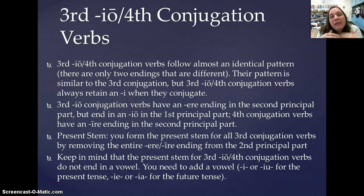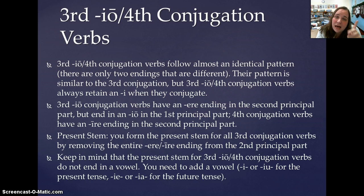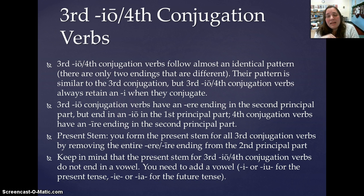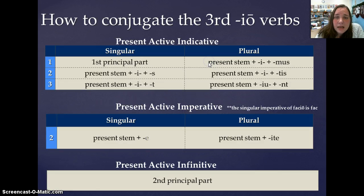You need to supply the vowel to show that you're either in the present or the future. The vowels that you supply for the present are either I, or IO in the Third Person Plural. For the future, it's IO in the First Person Singular, and IE in all the other Persons and Numbers. So let's take a look at how to conjugate Third IO verbs.